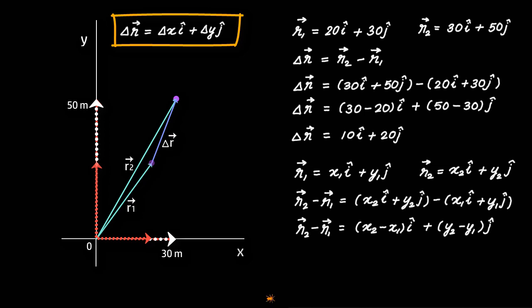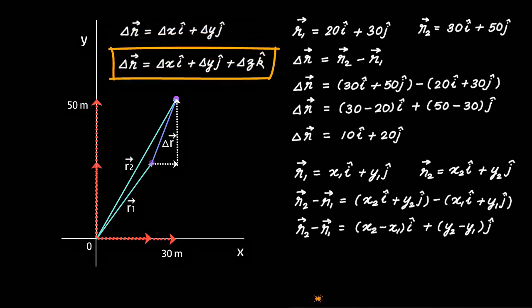This essentially means that the displacement vector Δr is nothing but a vector sum of displacement in x direction and y direction. If you're working in three dimensions, to find Δr, all you need to do is add displacement in z direction as well. So your equation becomes Δr = Δxi + Δyj + Δzk.